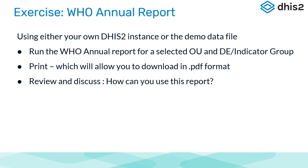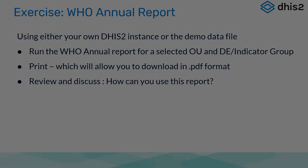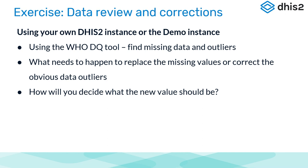Two exercises are proposed. The first is about the WHO annual report: use your own country DHIS 2 instance or the demo one, run the annual report for a selected org unit and data element or indicator group, print it to download as PDF, then review and discuss it — how can you use this report? For the second exercise, on data review and corrections, use the WHO DQ tool to find missing data and outliers, determine what needs to happen to replace missing values or correct obvious data outliers, and consider the difficult question: how will you decide what the new value should be?